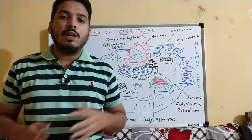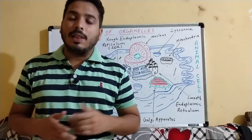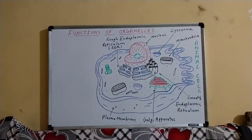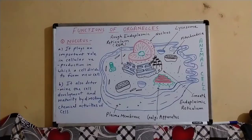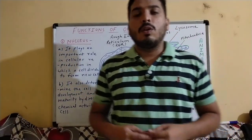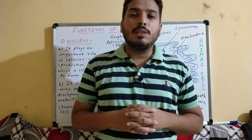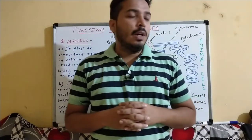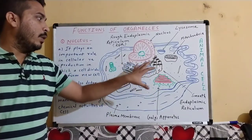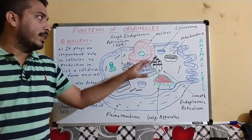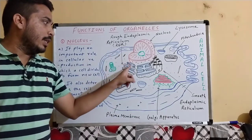Good morning friends, welcome back to my YouTube channel Science with Hemant Rathur. Today we will discuss about functions of different cell organelles present in the animal cell. Here on the board you can see a cross-section of an animal cell with different organelles including the nucleus, lysosome, mitochondria, smooth endoplasmic reticulum, rough endoplasmic reticulum, and Golgi apparatus.